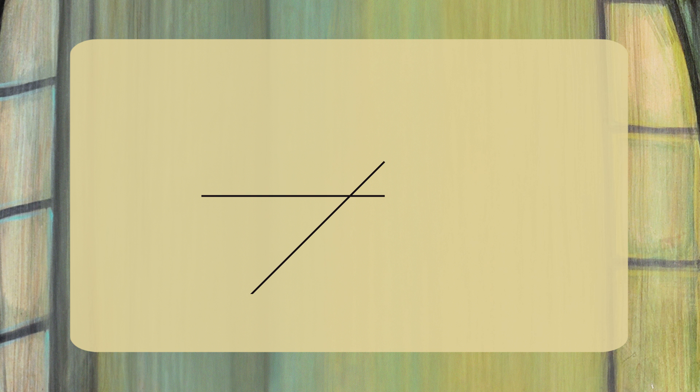Suppose two lines cross one another. There are now four angles. Let's give them names A, B, C, and D.